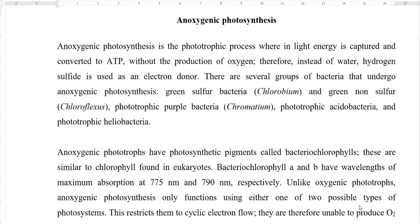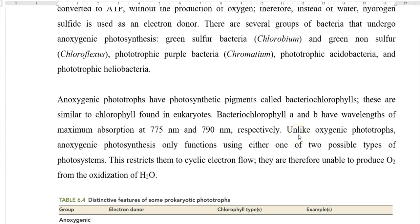There are several groups of bacteria that are able to perform anoxygenic photosynthesis. These include green sulfur bacteria such as Chlorobium, green non-sulfur filamentous bacteria such as Chloroflexus, and phototrophic purple bacteria such as Chromatium. Apart from that, phototrophic acidobacteria and phototrophic heliobacteria are also groups of anoxygenic photosynthetic bacteria.